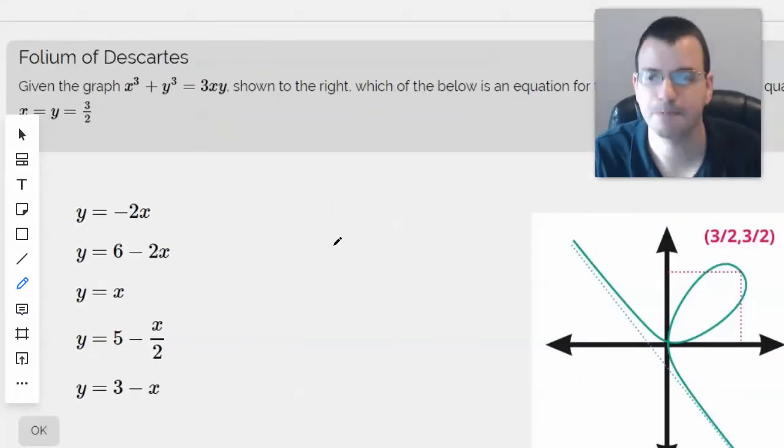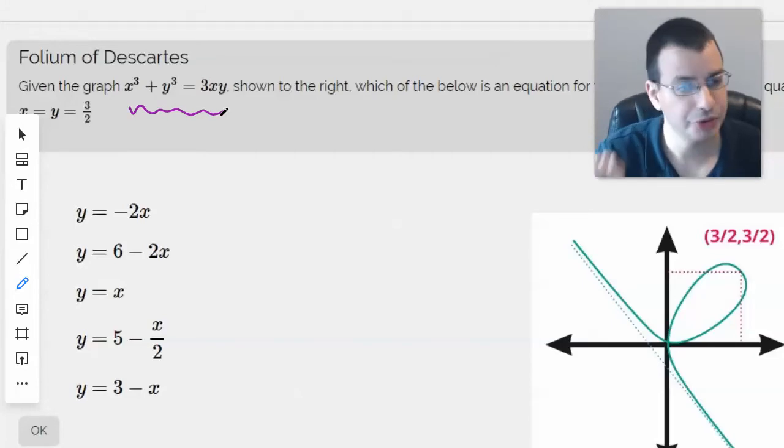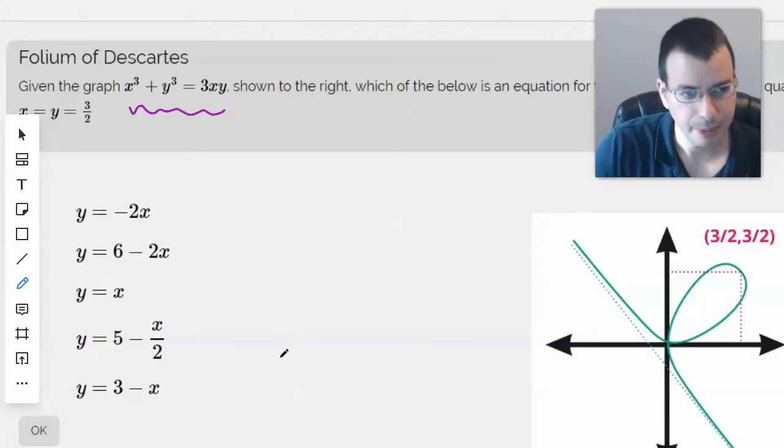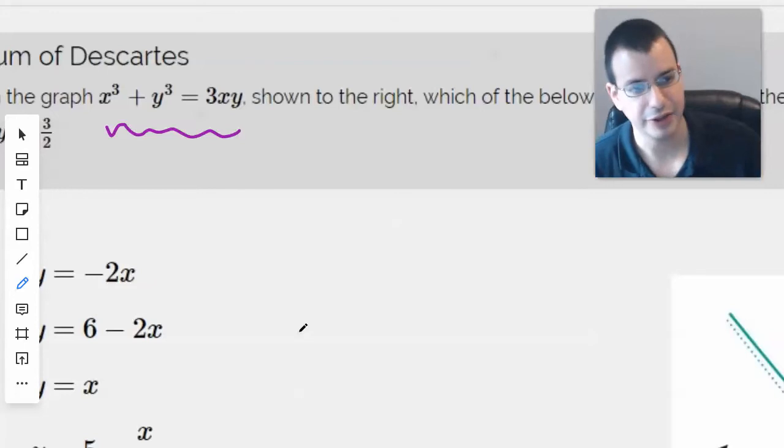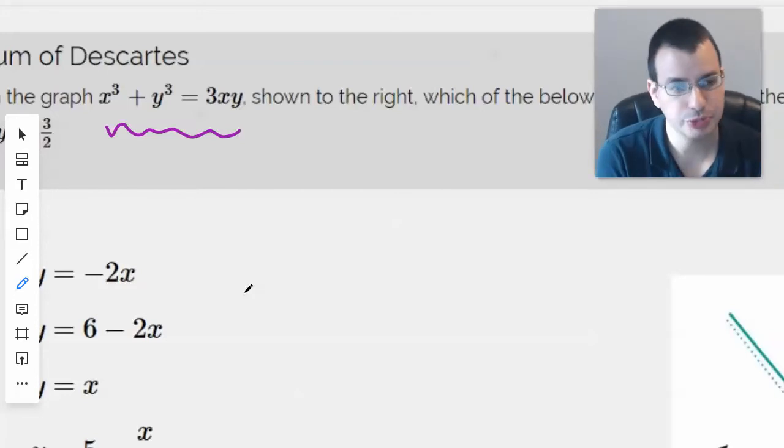The slope, we're going to want the derivative. And to find the derivative in this case, since we have a lot of x's and y's on both sides, it might be difficult to separate them. So I'm going to use implicit differentiation. The idea is we'll take the derivative of everything with respect to x.